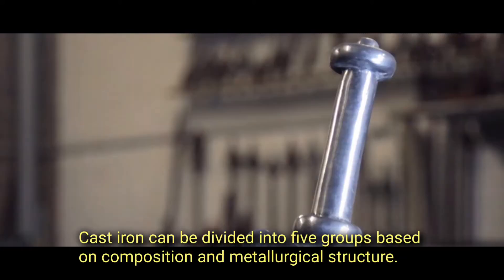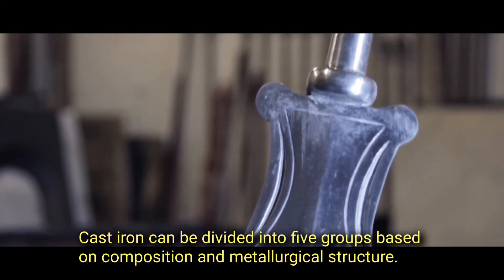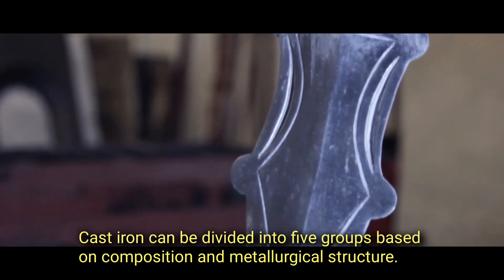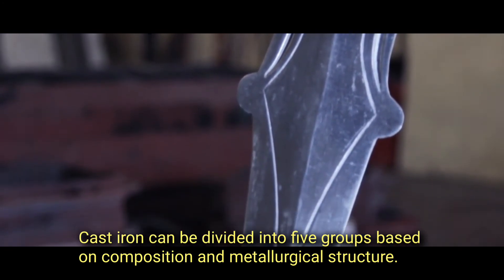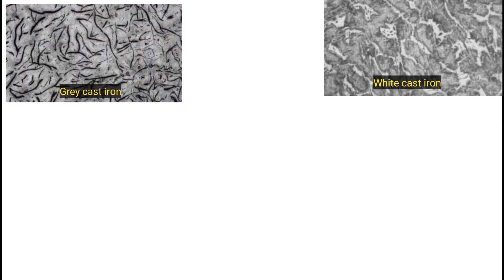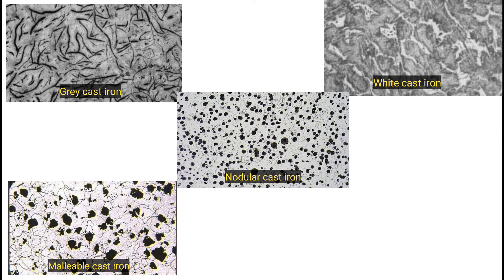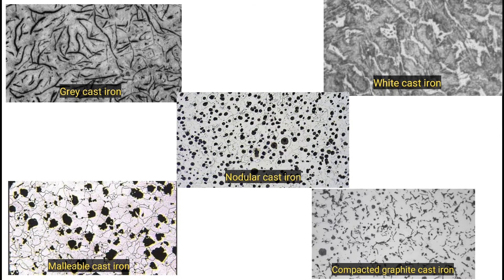Cast iron can be divided into five groups based on composition and metallurgical structure. They are: gray cast iron, white cast iron, malleable cast iron, nodular cast iron, and compacted graphite cast iron.